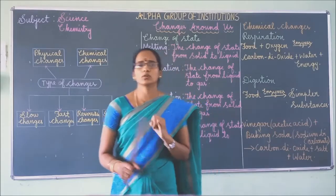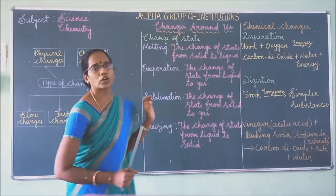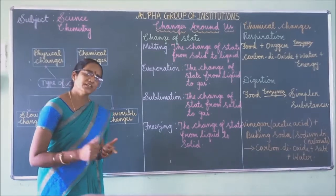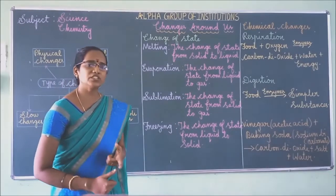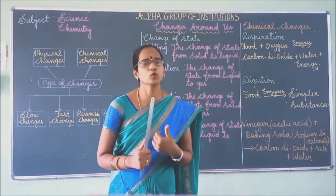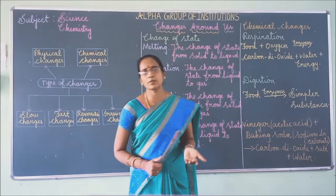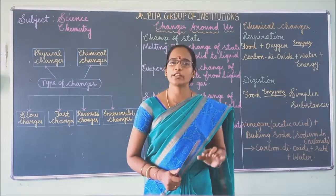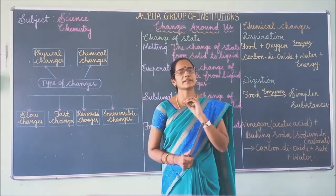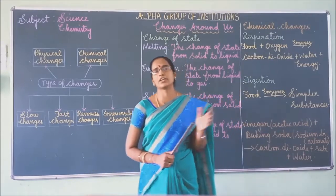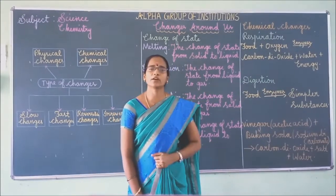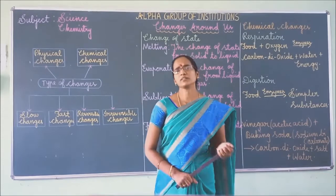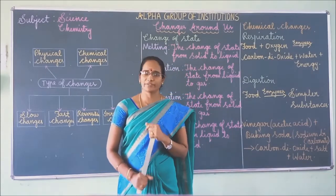So, to summarize: slow change, fast change, reversible change, irreversible change; desirable change means useful to us; undesirable change means harmful to us; periodical change happens at regular intervals of time; whereas non-periodical change does not happen at regular intervals of time.